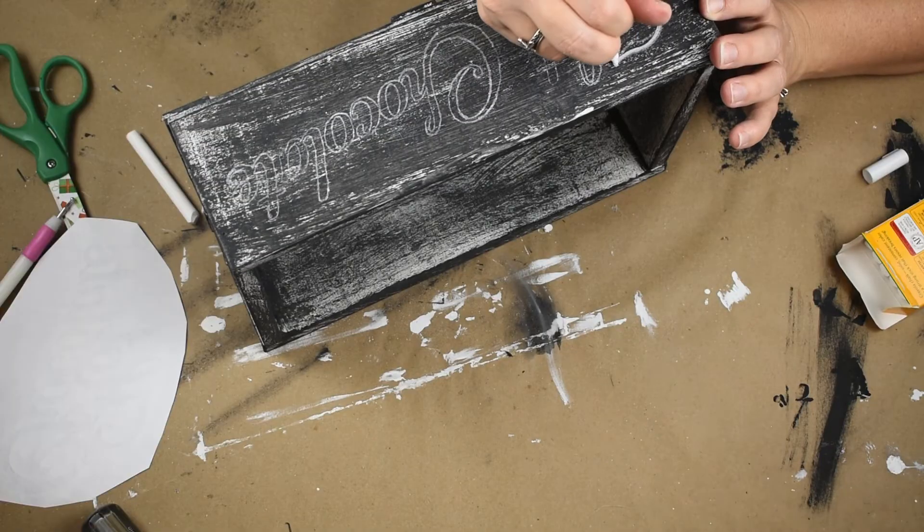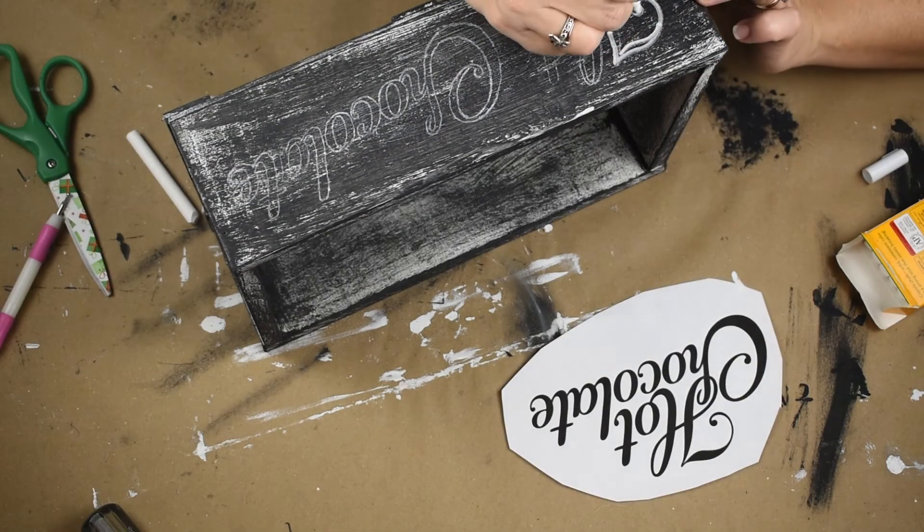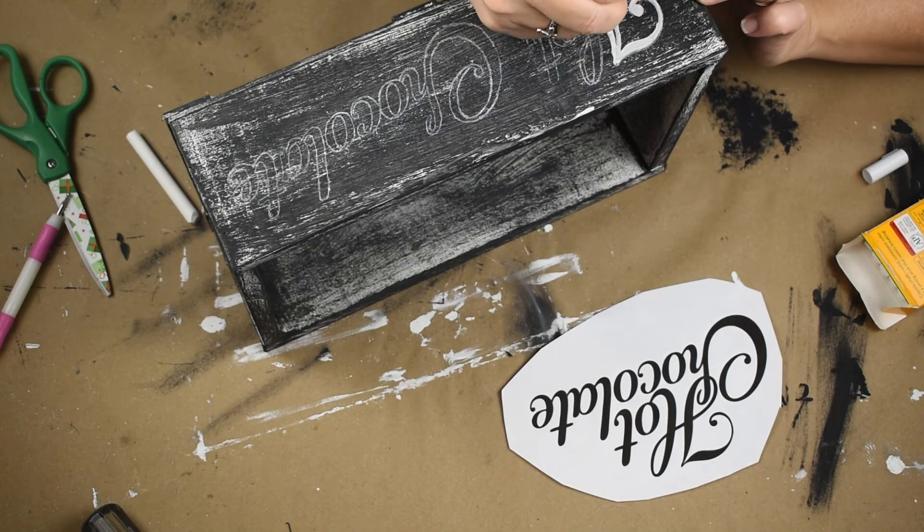So the last thing I do is I take this white chalk pen from Dollar Tree and I just go ahead and just trace over my words and then this project is finished.